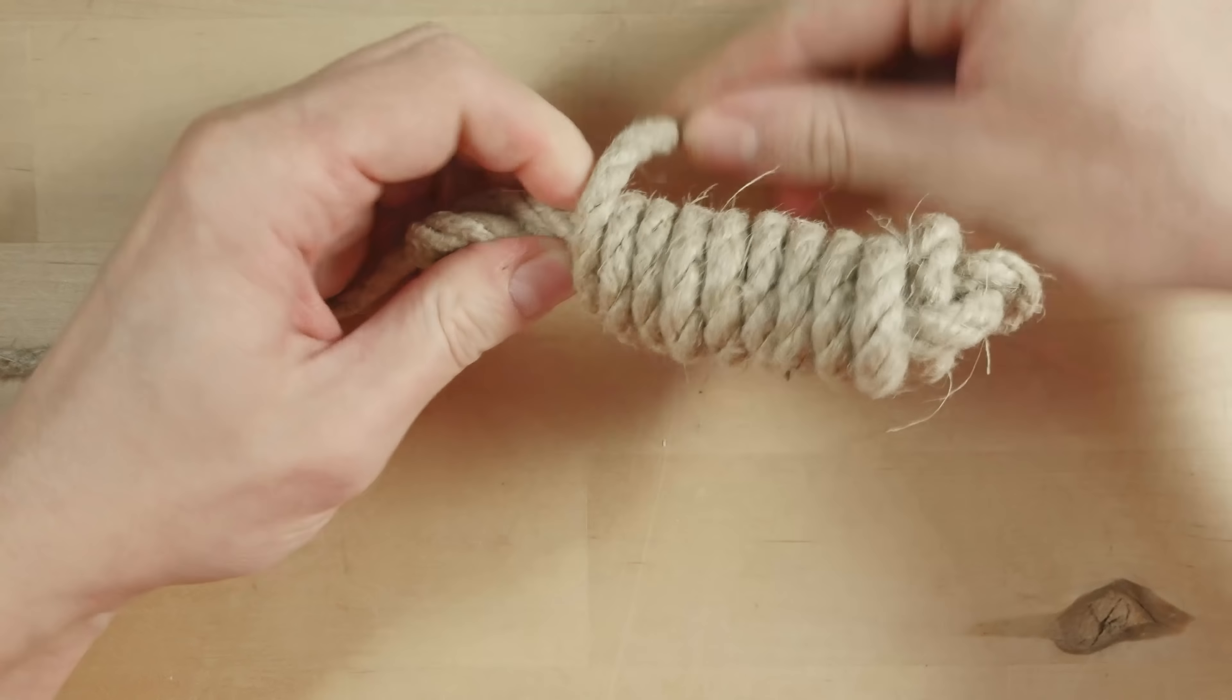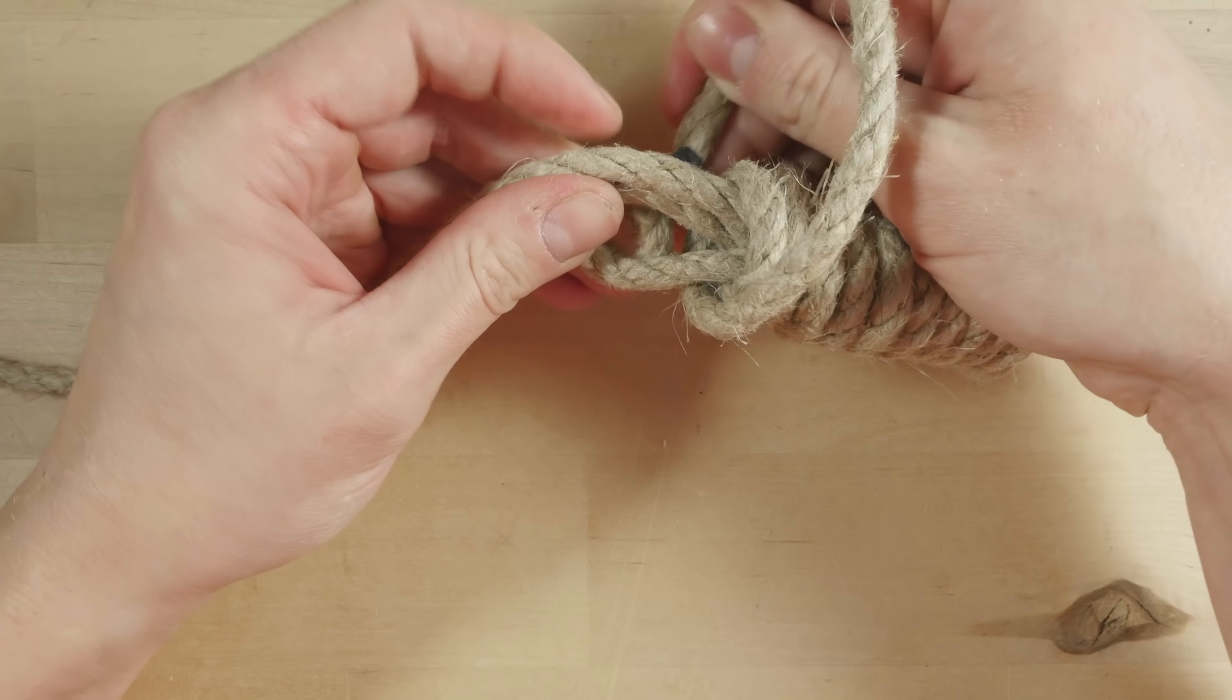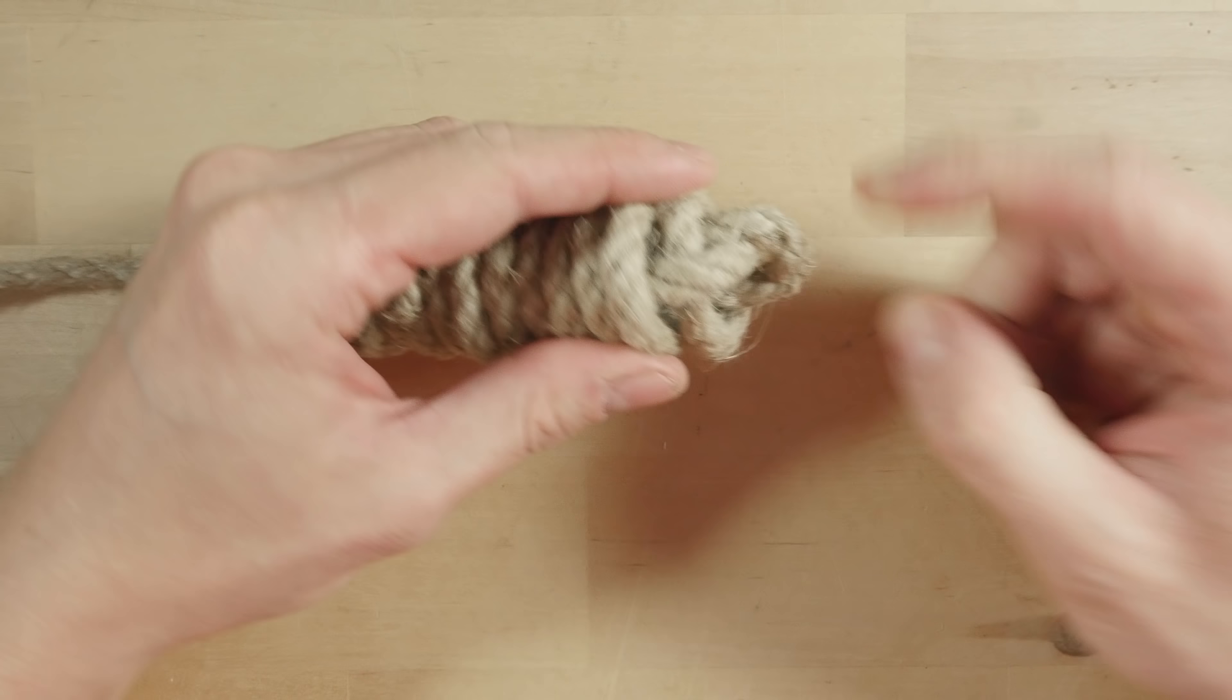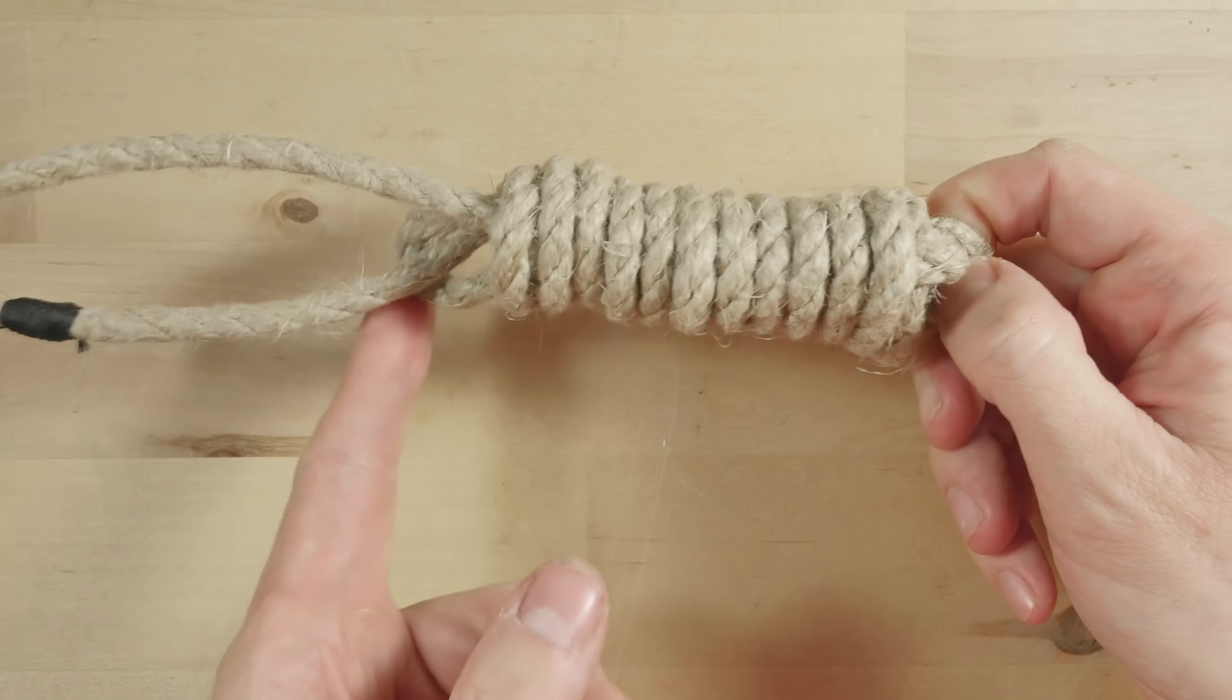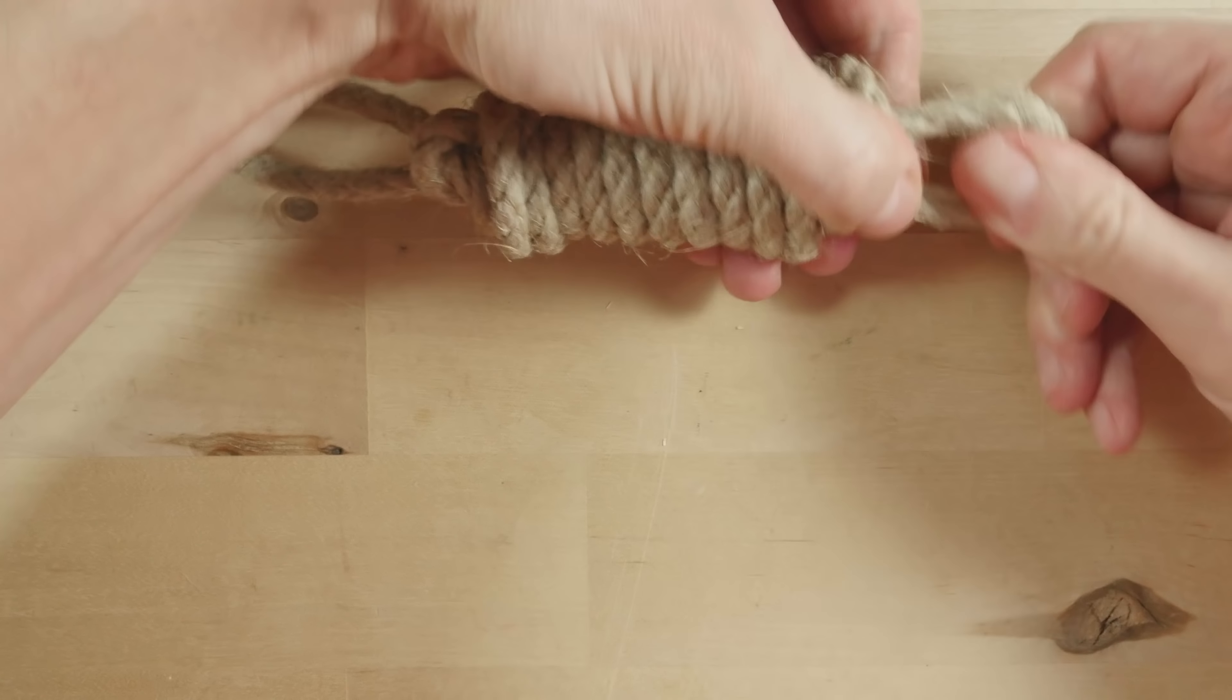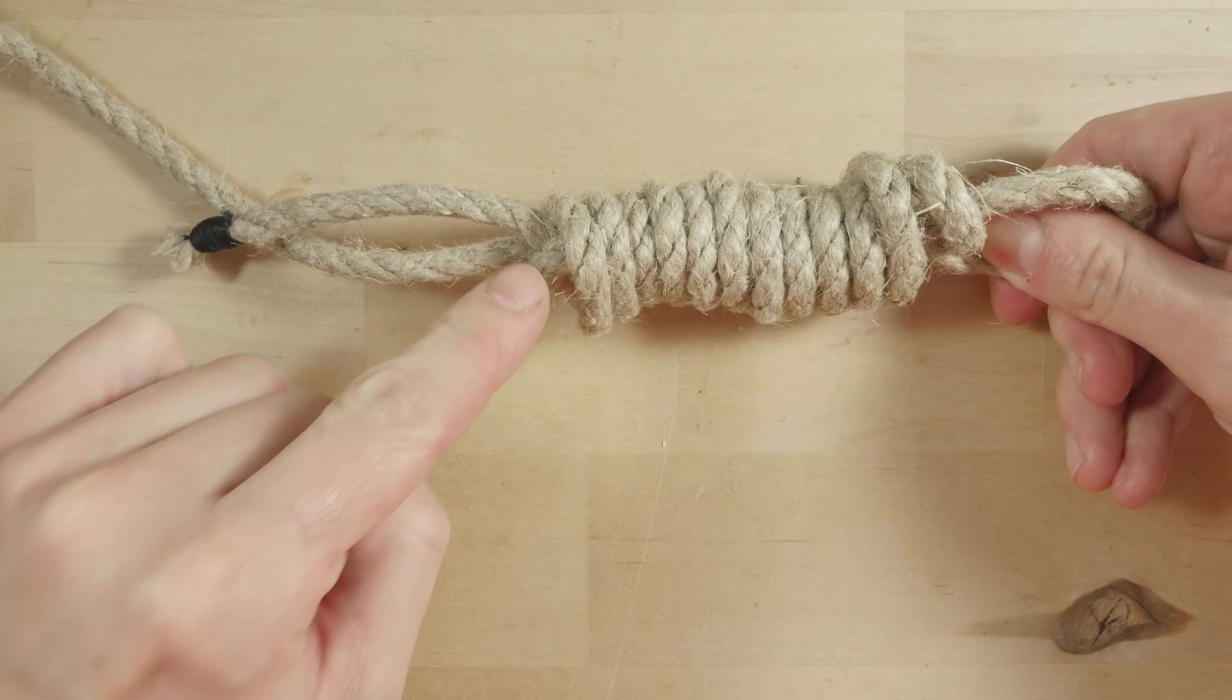After doing a bunch of these turns, pass your end under and through the bight on the other side. Like this. Now to tighten everything up, pick up this top strand and pull this bight on the left in. So like this. You can see that the bight on the left is closing up.